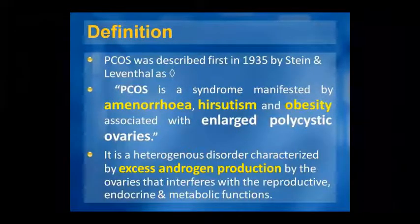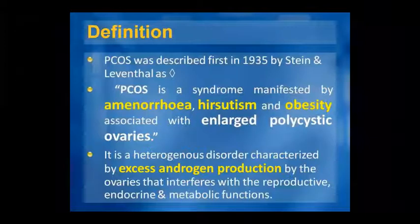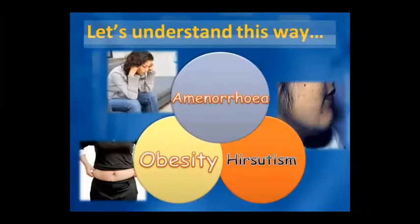PCOS is a heterogeneous disorder characterized by absence of menses, hirsutism, facial hair, and obesity, along with polycystic ovarian cysts. It involves excess production of hormones that interfere with reproductive, endocrine, and metabolic function.